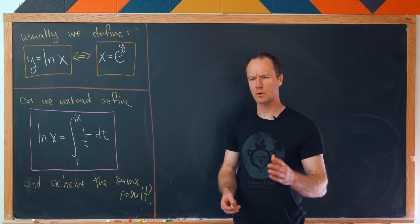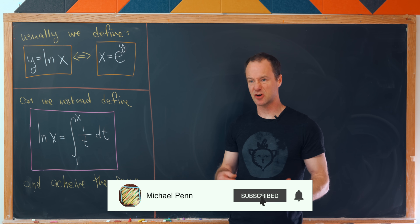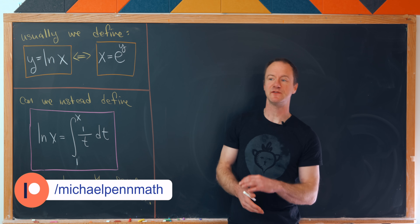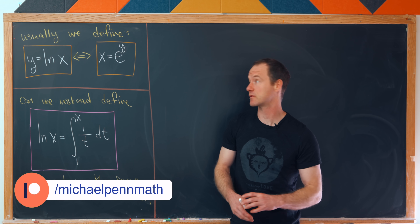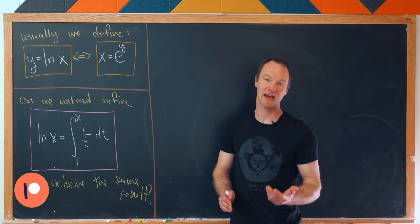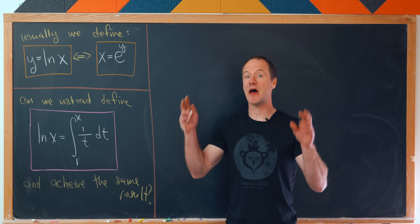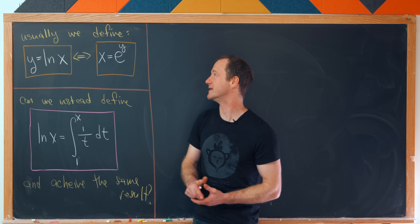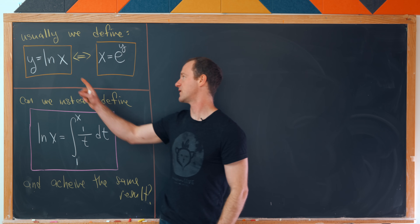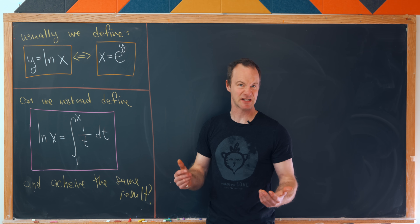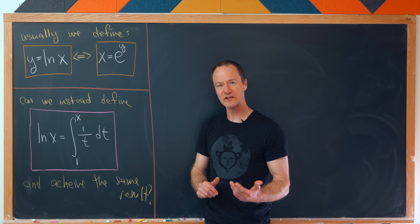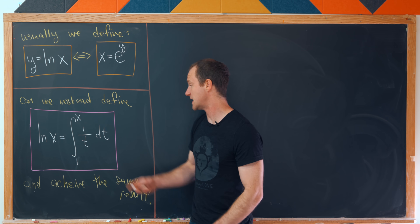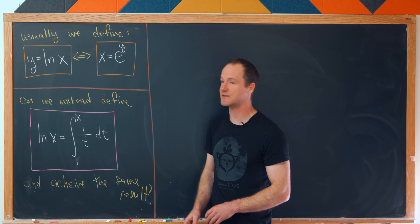Usually we define logarithms or any inverse function in terms of its non-inverse counterpart. But today I'm going to show that at least in one case we can define it in terms of an antiderivative. The particular function we'll look at is the natural logarithm. Recall that usually we say y equals the natural log of x if and only if x equals e to the y — defining the natural logarithm in terms of the exponential function. But the question is: could we instead define the natural log of x to be the integral from 1 to x of 1/t dt and achieve the same result?